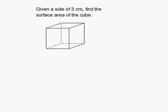How to find the surface area of a cube? Let's first recall the equation. It is 6 times side squared.